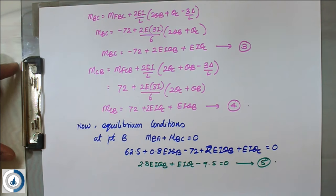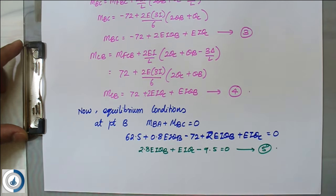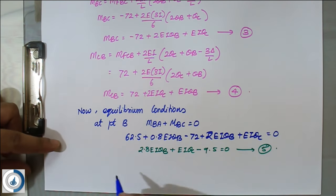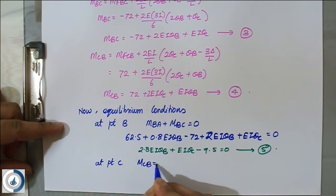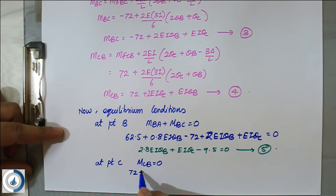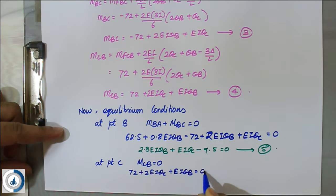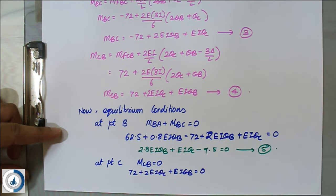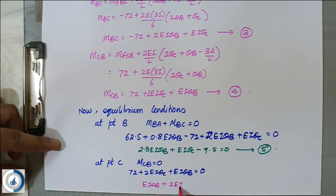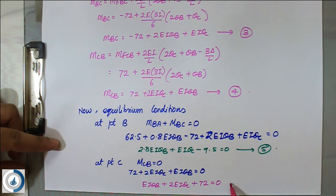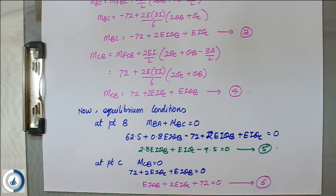The second equilibrium condition is at hinge C, where MCB = 0. Substituting equation 4: 72 + 2EI·θC + EI·θB = 0, which rearranges to EI·θB + 2EI·θC + 72 = 0. This is equation number 6. We now solve equations 5 and 6 simultaneously.